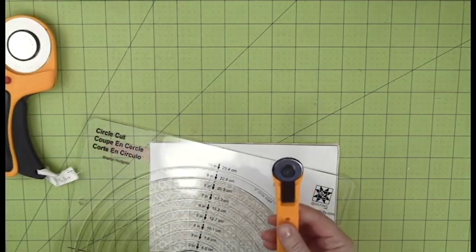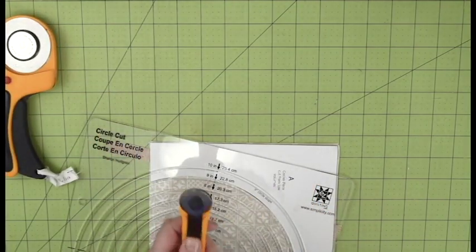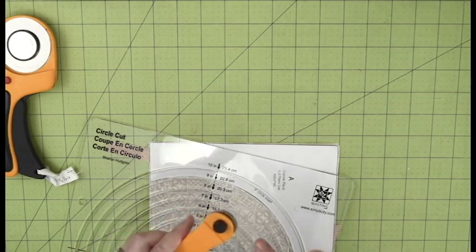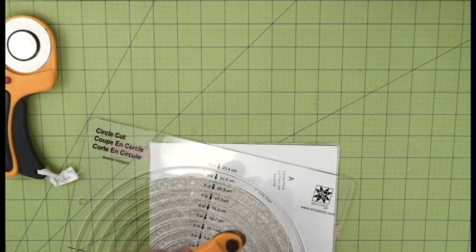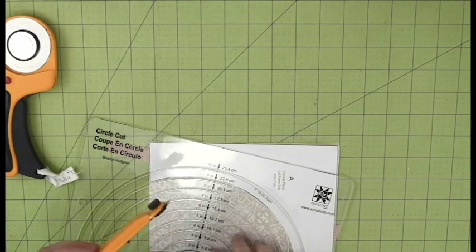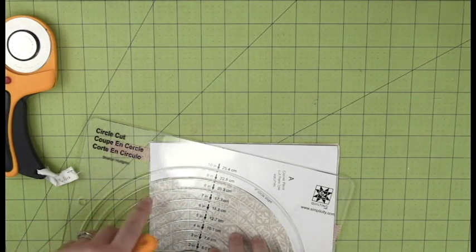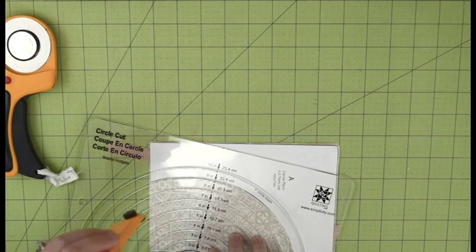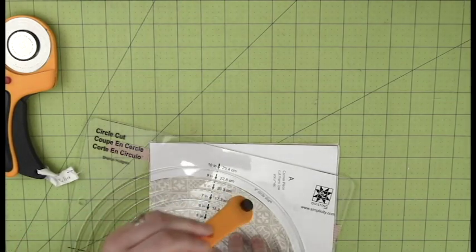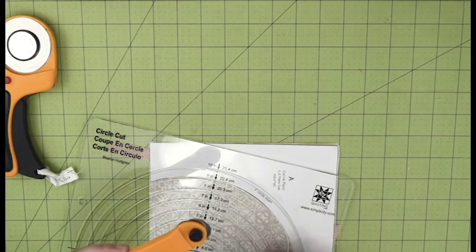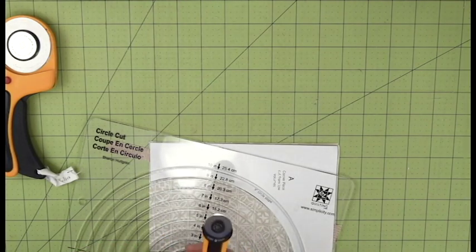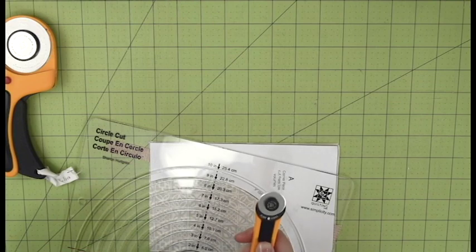But here is the one difficulty with that. This blade does not stick out very far from the workings of the Olfa cutter. And since you are also going through an acrylic template, unless you hold the blade straight upright, you don't have the distance you need to also cut the fabric. But any other rotary cutter size will do.